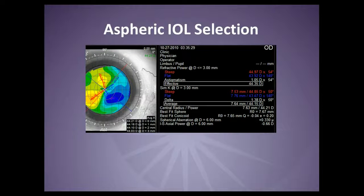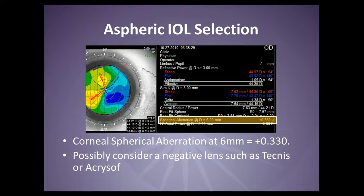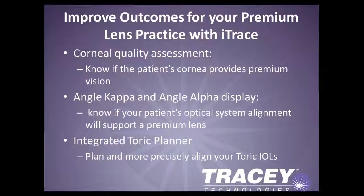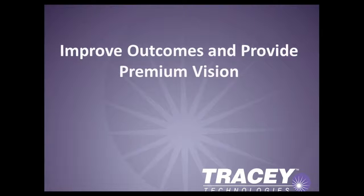If you are considering an aspheric monofocal for your patient, you can use the corneal spherical aberration at 6 millimeters to determine the offsetting asphericity. Depending on the patient's lifestyle, you can select your aspheric lens to reduce or eliminate the spherical aberration in the patient's cornea. These simple steps can improve your success with premium IOLs and are all available with the iTrace exam that can be acquired in less than one minute. Feel confident that the premium lens options you provide to your patient will provide premium vision.